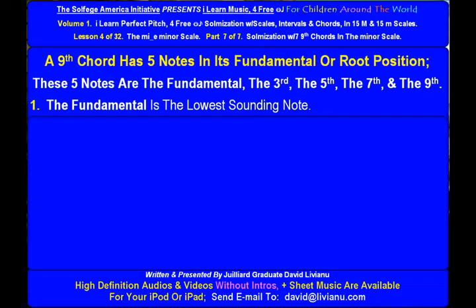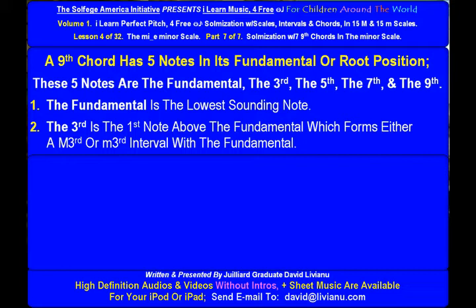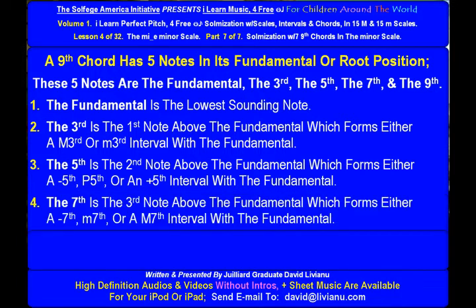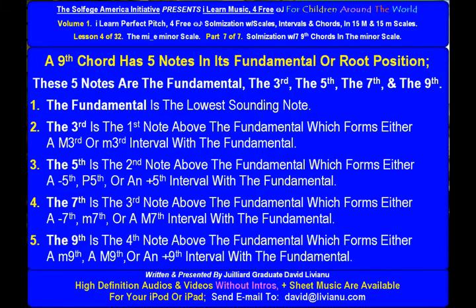The fundamental is the lowest sounding note. The 3rd is the first note above the fundamental which forms either a major 3rd or minor 3rd interval with the fundamental. The 5th is the second note above the fundamental which forms either a diminished 5th, perfect 5th, or an augmented 5th interval with the fundamental. The 7th is the 3rd note above the fundamental which forms either a diminished 7th, minor 7th, or a major 7th interval with the fundamental. The 9th is the 4th note above the fundamental, which forms either a minor 9th, a major 9th, or an augmented 9th interval with the fundamental.